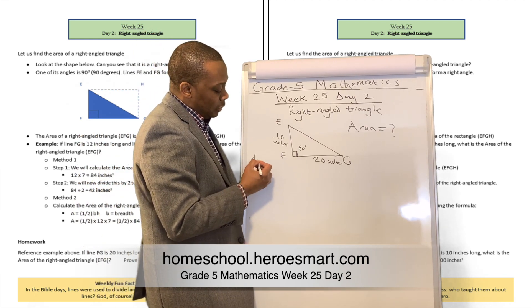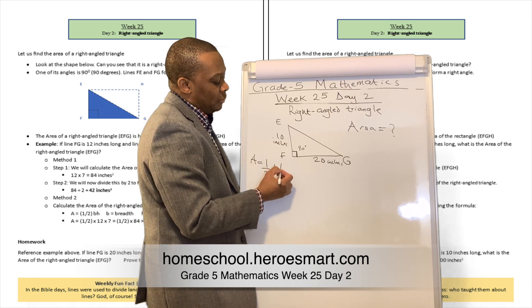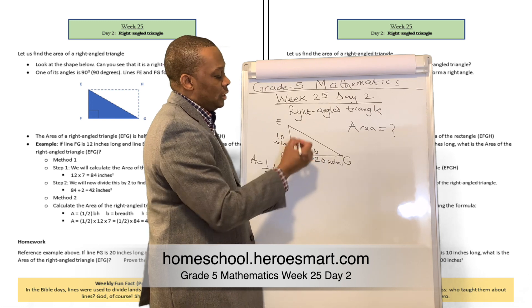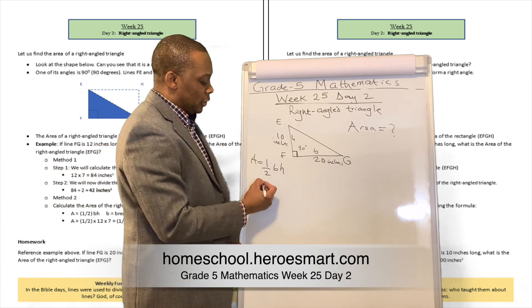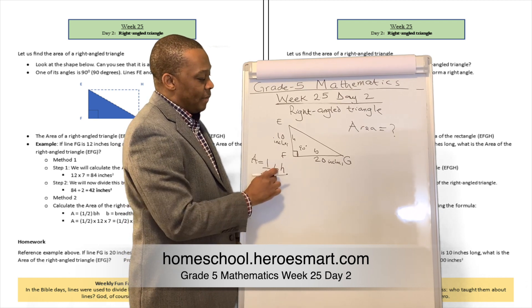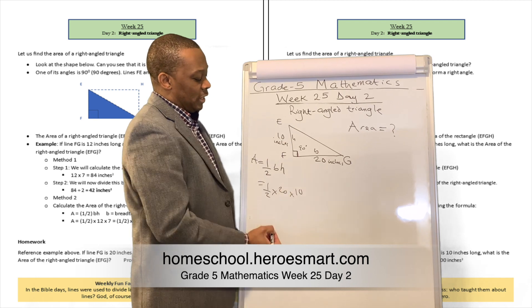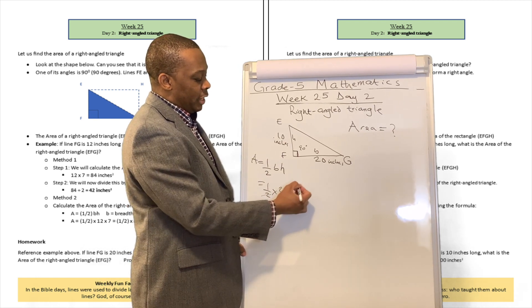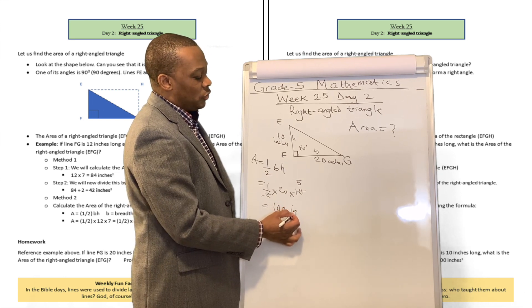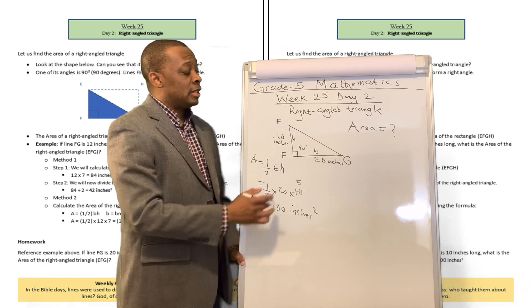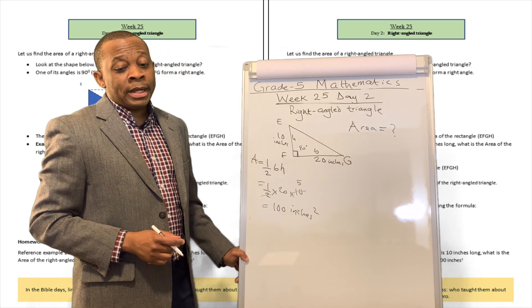We have a little formula that we can use to do that. It's one-half base times height. This is the base. This is the height. All we need to do in this situation is one-half multiplied by base, which is 20, and then multiplied by its height, which is 10. Two is going to cancel 10 over there, makes it 5, which is going to be equivalent to 100 inches squared. That's going to be the area of this right-angled triangle.